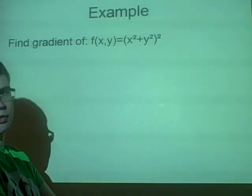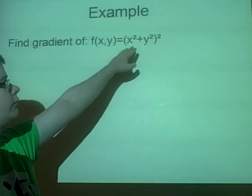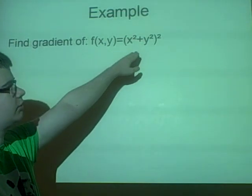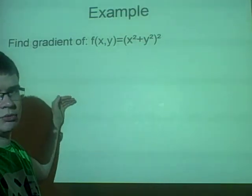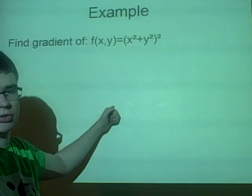And we want to do it with y as well. So we find the derivative of the bracket, which gives us 2y. Move the power, so it's just the same as the last one, but we have 4y(x²+y²).